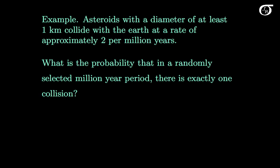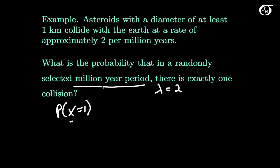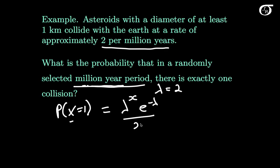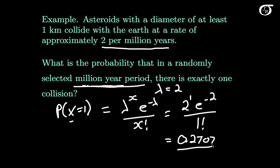If the Poisson distribution is reasonable here, then we are interested in the probability that x equals 1, where x is our random variable representing the number of collisions. We have a million year period, and the mean number of occurrences in that million year period is 2, so lambda is 2. We want P(x=1), which is lambda to the x, times e to the minus lambda, over x factorial. This equals 2 to the first power times e to the minus 2, over 1 factorial. Putting that into your calculator gives approximately 0.2707.